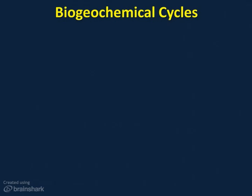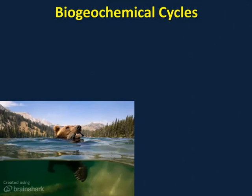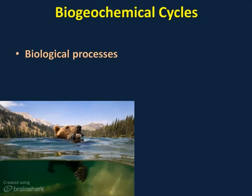Elements pass from one organism to another and to various parts of the biosphere in closed loops called biogeochemical cycles. That's one big word with really three words crammed together: biological, geological, and chemical. There are many ways they can be classified. Biological processes consist of any and all activities performed by living organisms — like a bear catching a fish, digestion, eating, breathing, burning food, and eliminating wastes.